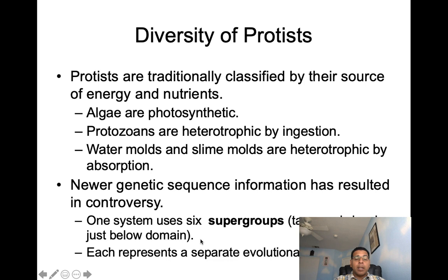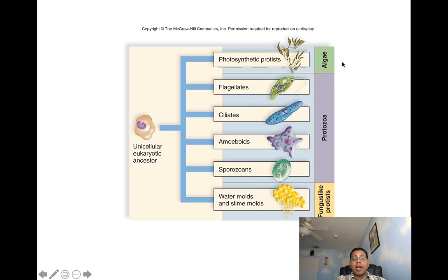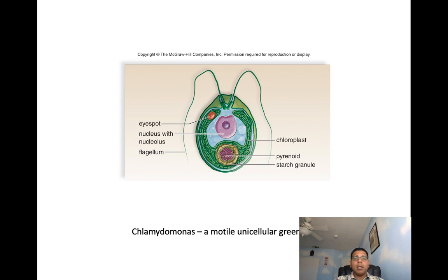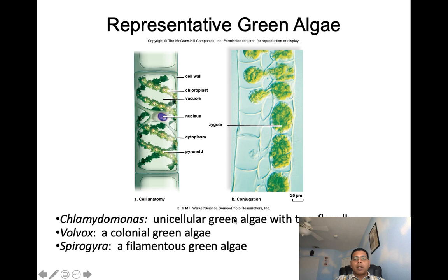Newer genetic sequence information has resulted in controversy, and one system uses six supergroups at a taxonomic level just below domain, each representing a separate evolutionary lineage. When we look at the photosynthetic protists — algae — we have Chlamydomonas, which is a motile unicellular green algae with two flagella; Volvox, which is a colonial green algae; and Spirogyra, which is a filamentous green algae.